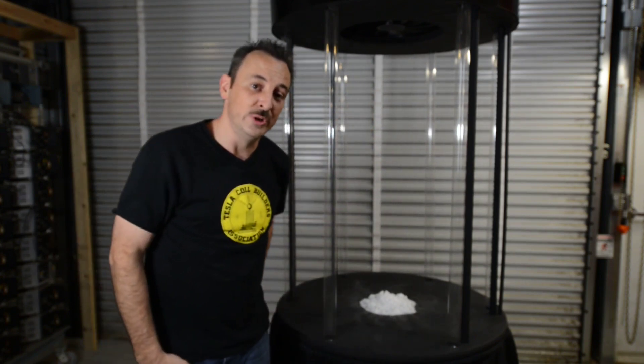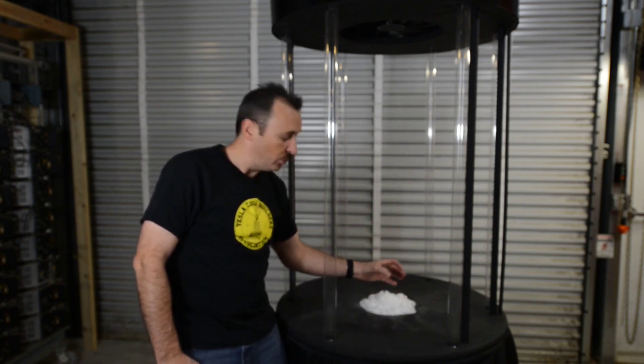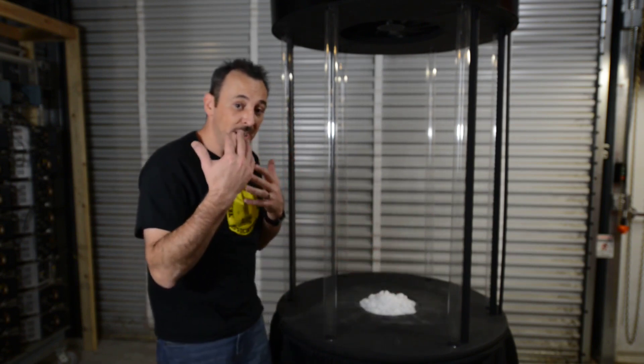Now we need to be able to see the vortex and that's where the dry ice comes in. The vortex comes down and it pulls that material up into it and that allows our eyes to see it.